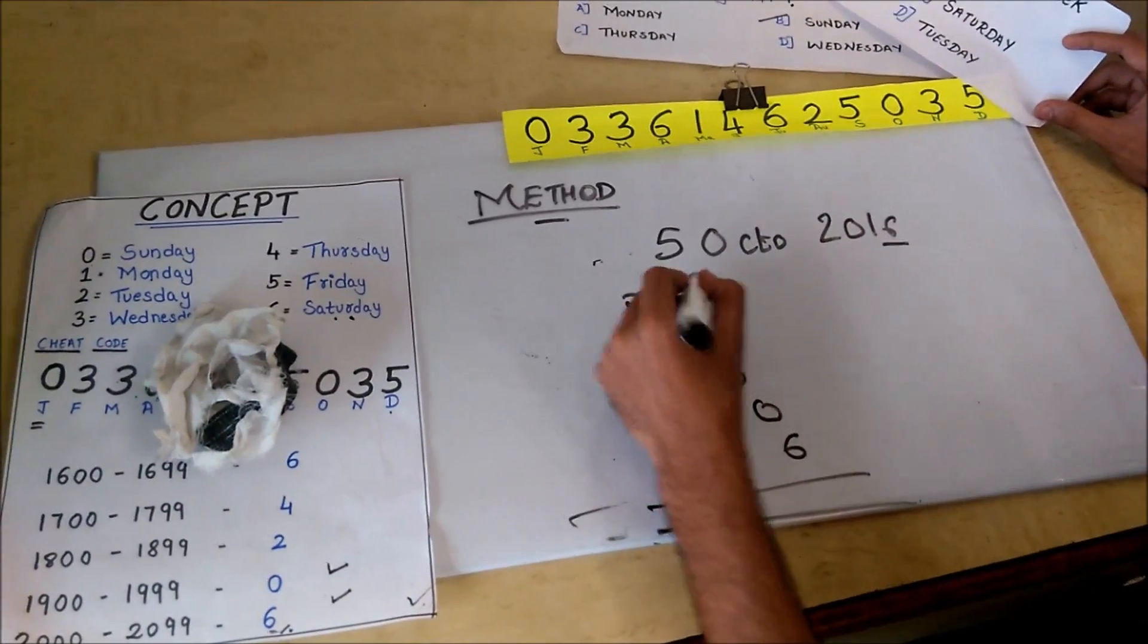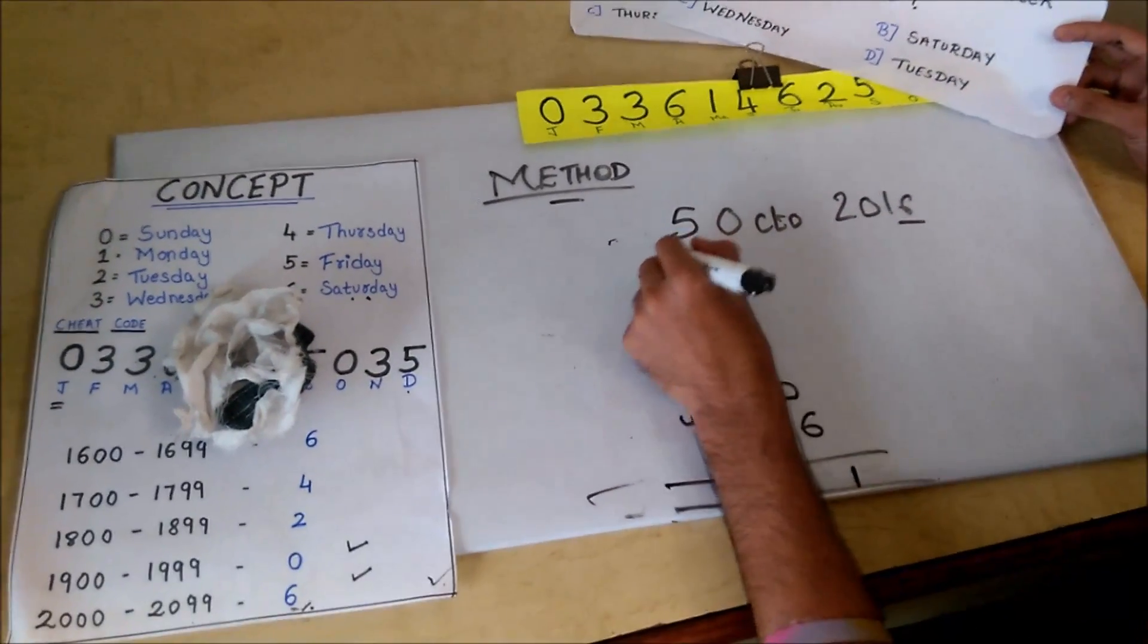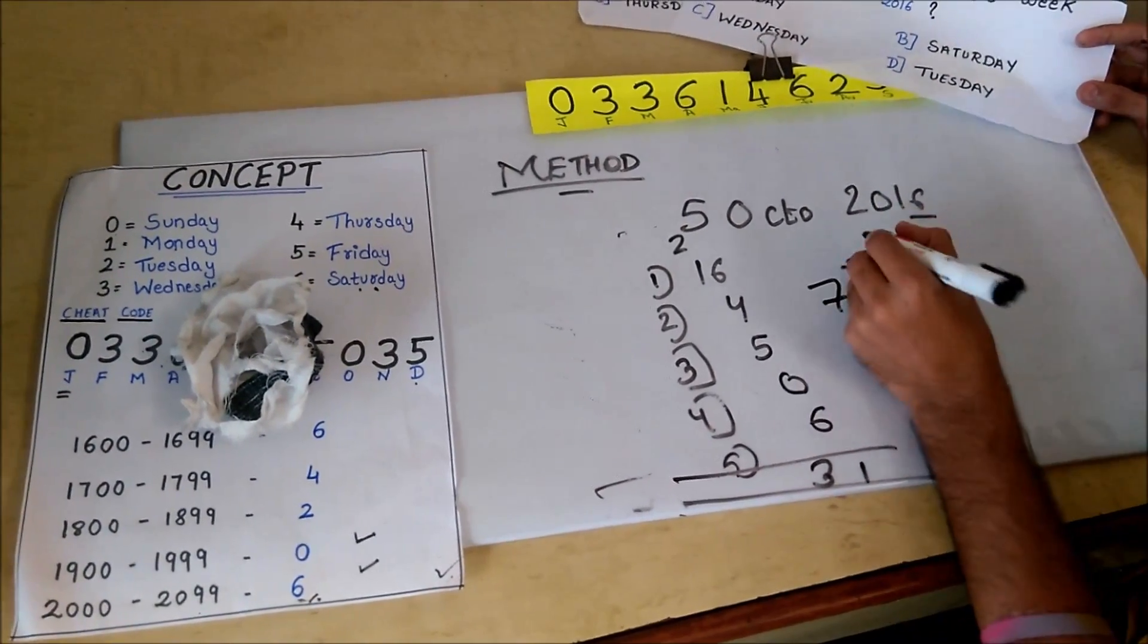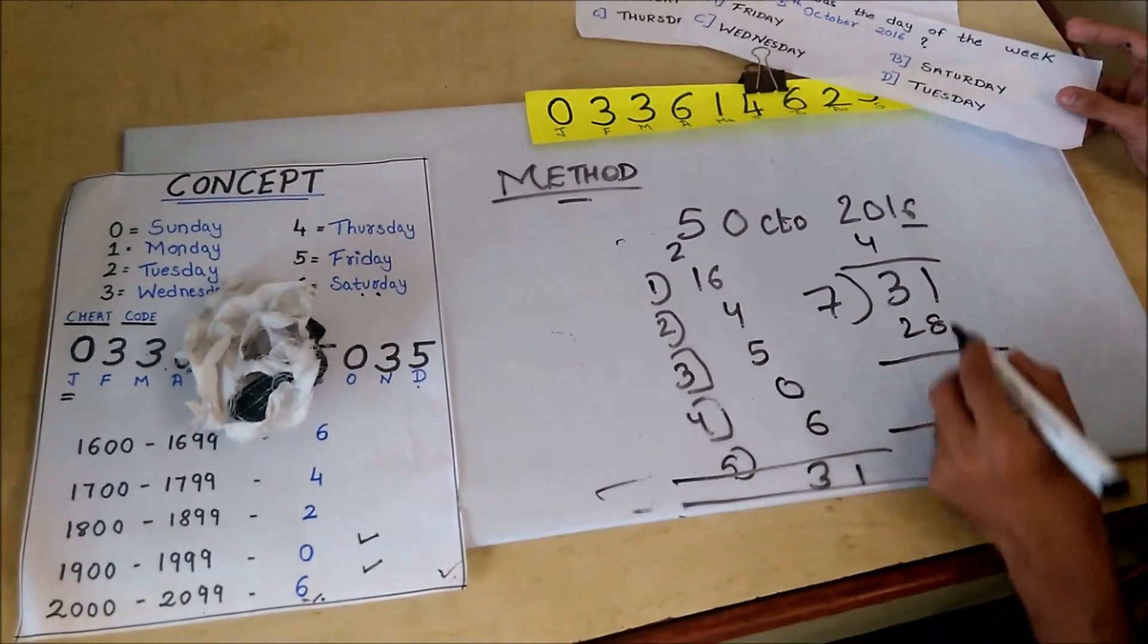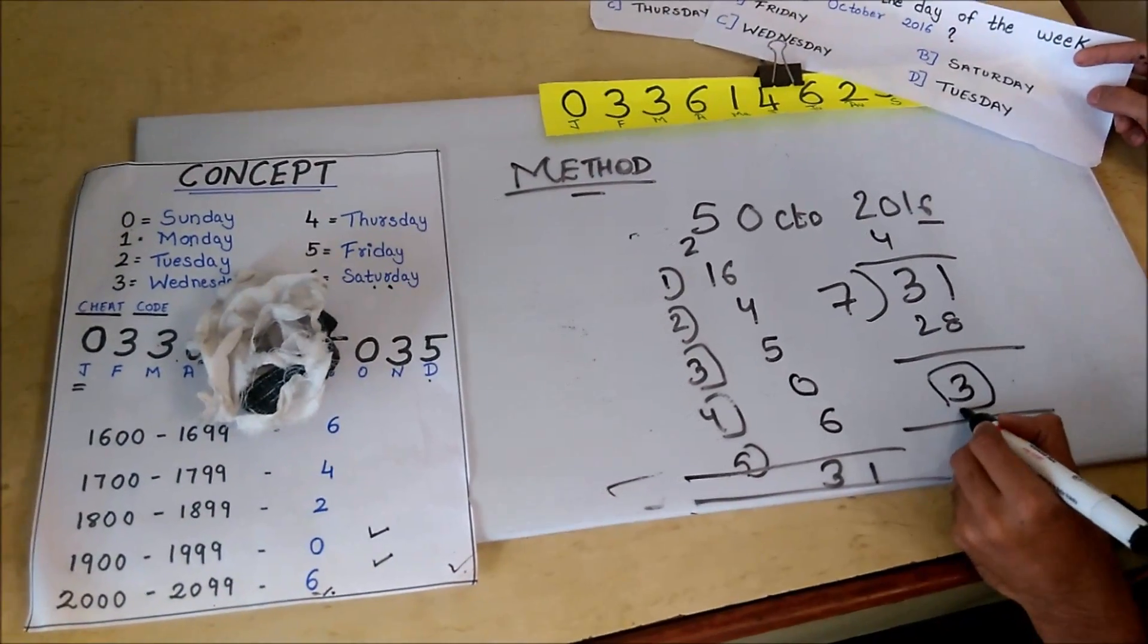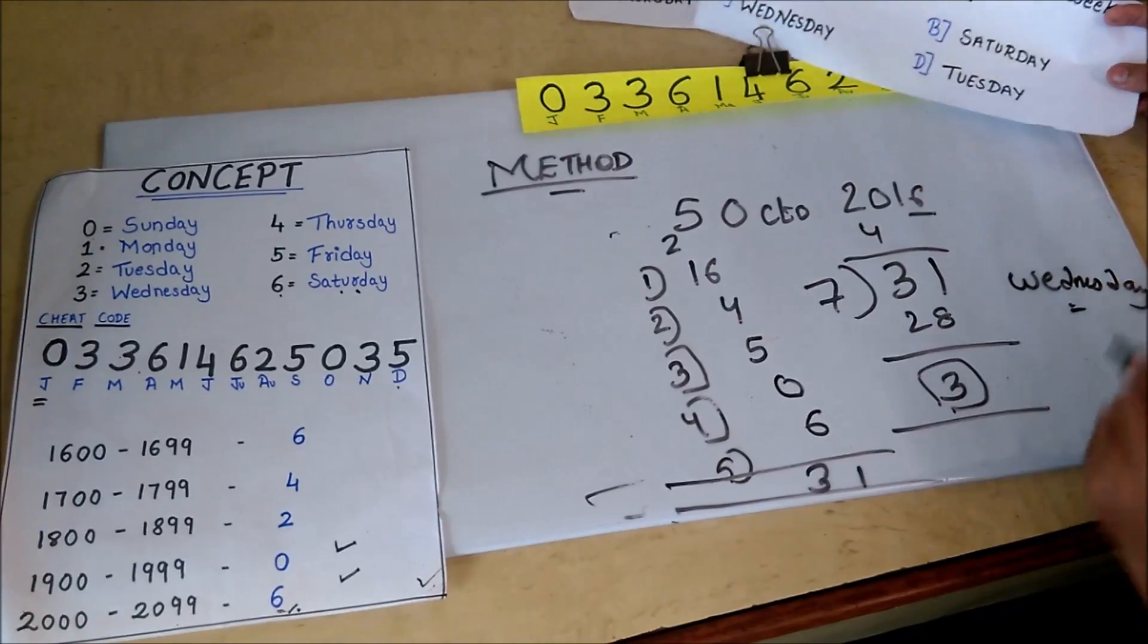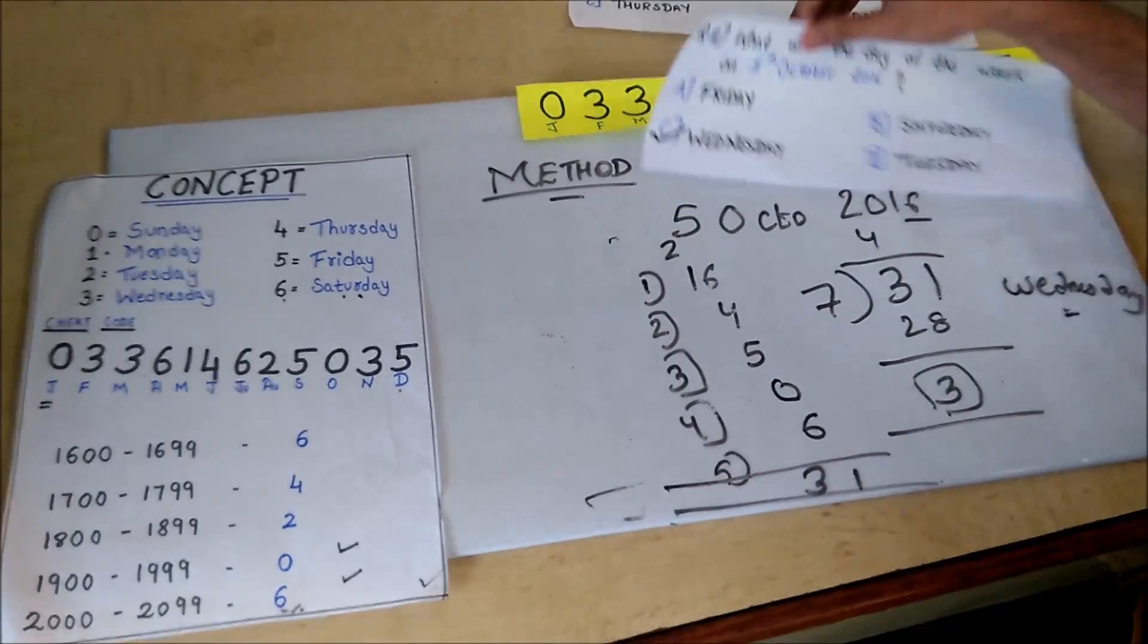Now add everything. 6 plus 4 is 10, 5 plus 5 is 10, plus 1 is 11. 11 plus 5 is 16, plus 6 is 22. No, let me recalculate: 6 plus 4 is 10, 16 plus 5 is 21, plus 0 is 21, plus 6 is... Actually, we get 31. Now divide by 7. 7 times 4 is 28. So we got remainder 3. Cheat code for 3 in days is Wednesday. So it was Wednesday.